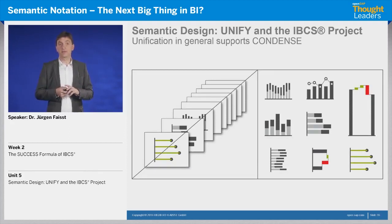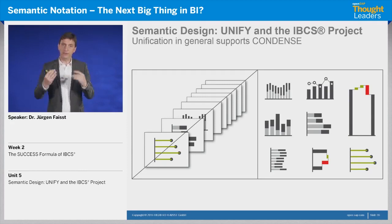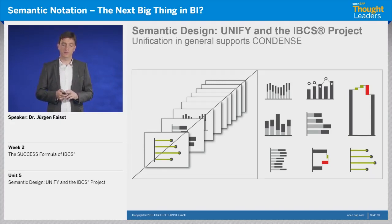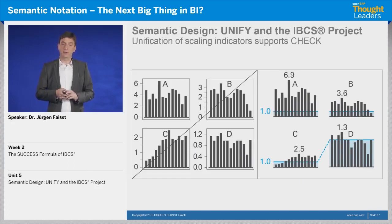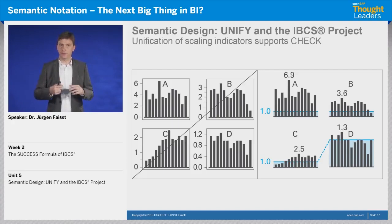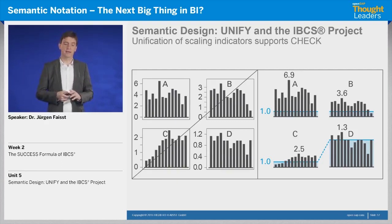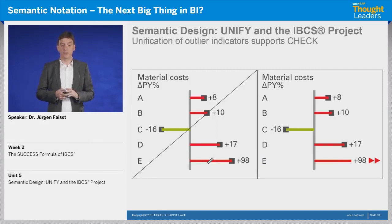Unification in general also supports CONDENSE through the usage of multiple charts. If we have decided on specific chart types, we can place them together on one page, understand them, and by this condense information. Another aspect is the support of CHECK. We have been talking about correct scaling — sometimes it's not possible to use the same scale, but if not, we should show that it is a different scale using scaling indicators. If those are standardized through semantic design, you will understand the different scales, which supports CHECK. The same is true for outlier indicators: the unification of those indicators supports the check issue.